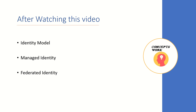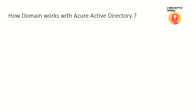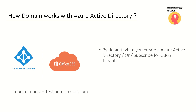In order to understand the entire identity architecture, there is something really important to understand first — how domains work in Azure Active Directory — because this actually contributes to the identity state in Azure AD. So let's start by understanding how domains work with Azure Active Directory, and then we'll switch to identity models.